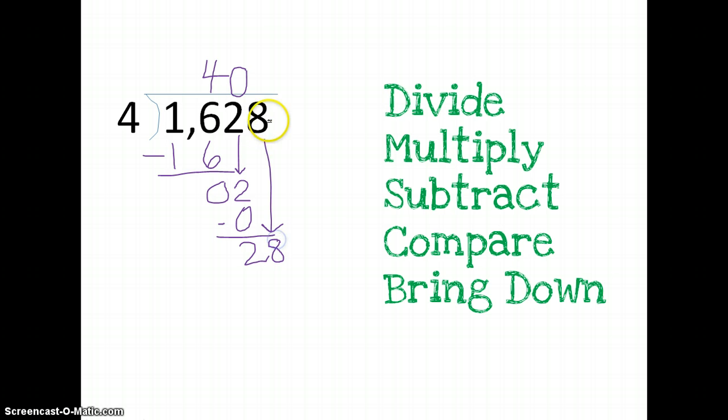Now, 4 will go into 28 seven times. 7 times 4 is 28. Subtract. I end up with 0.